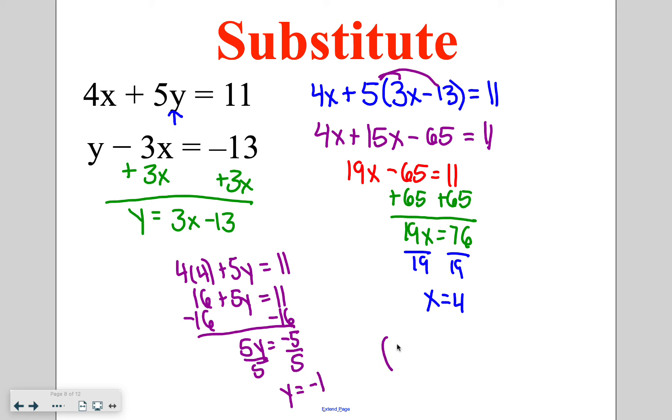And dividing by 5 on both sides, I find that y is equal to negative 1. So my final answer here is 4, negative 1. That is the place where those two lines would intersect on the graph.